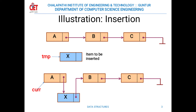X is considered as a temporary node and A is the current node. The pointer in element A points to element X, and the pointer in element X points to B. By doing this, element X is inserted between elements A and B. Before insertion, A pointed to B; after insertion, A points to X and X points to B.